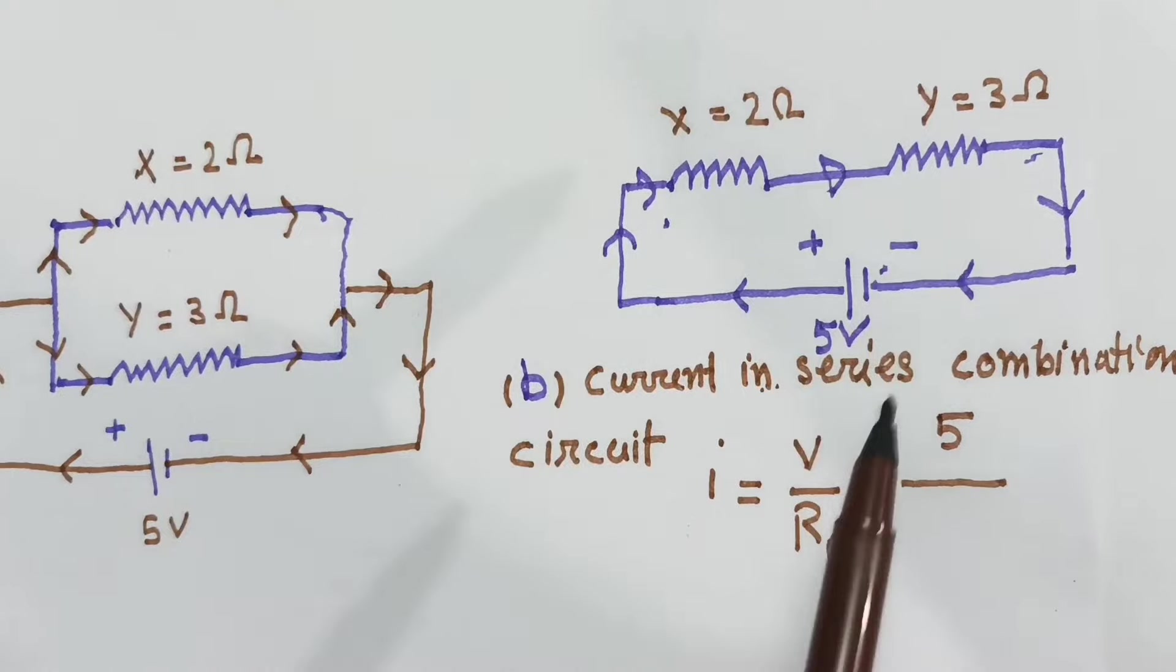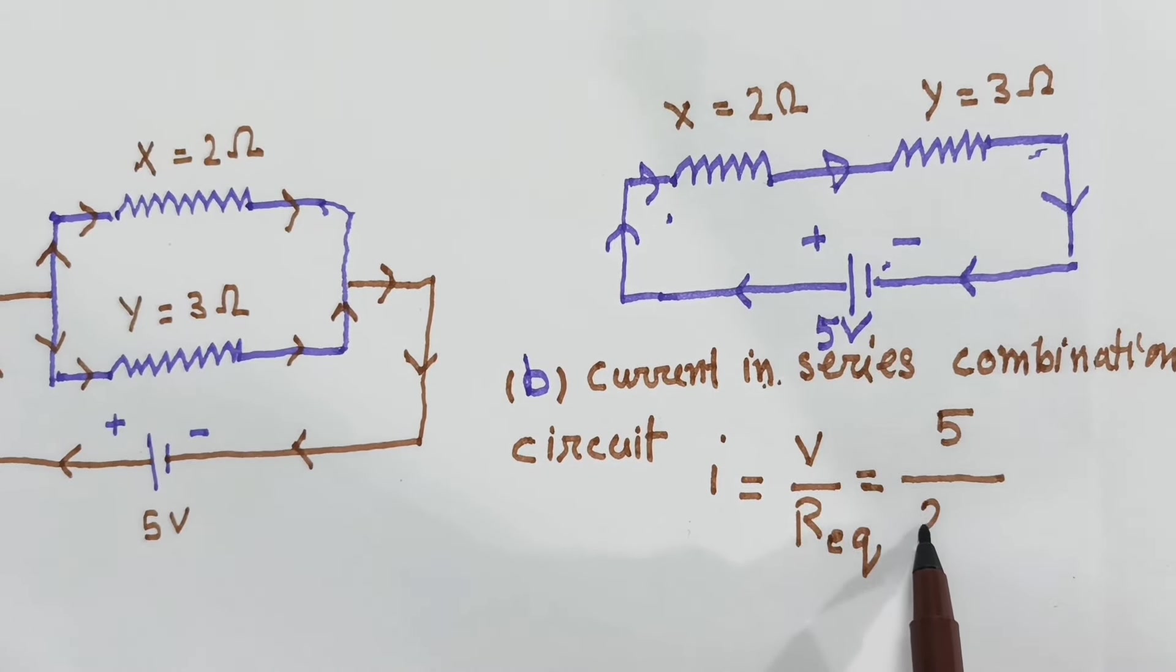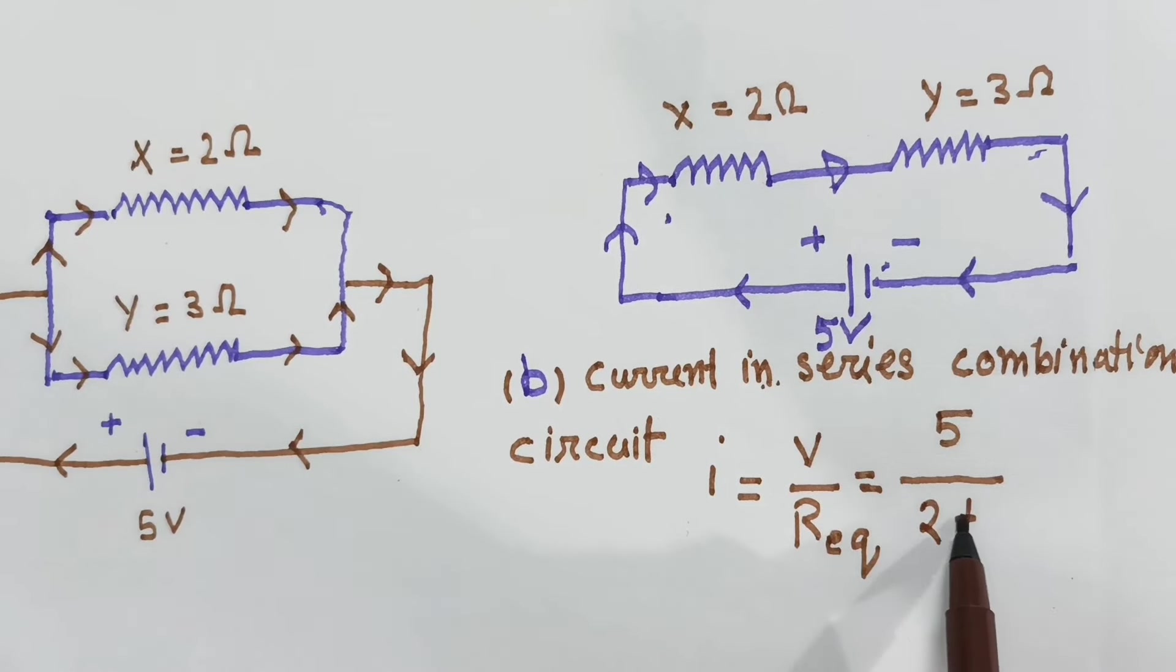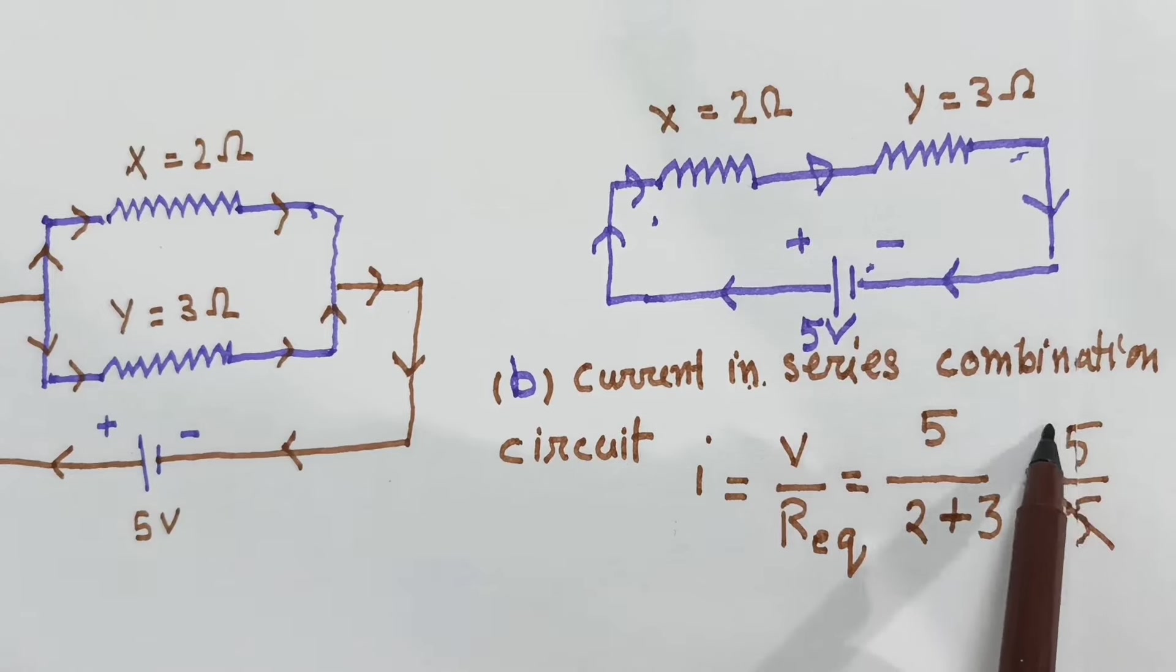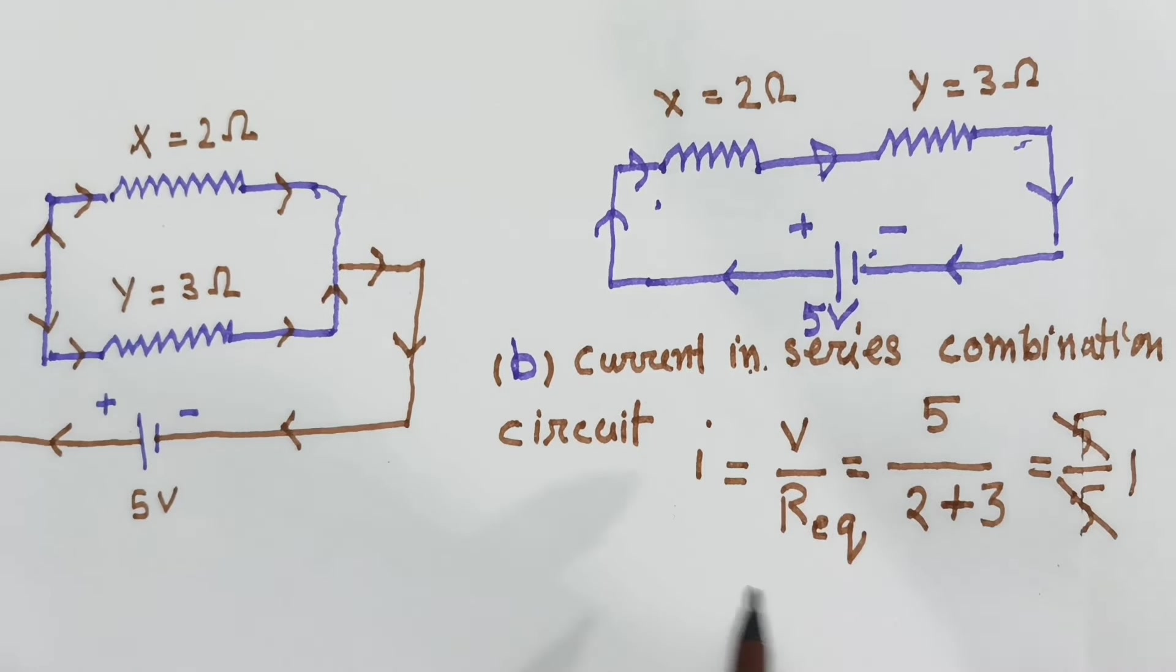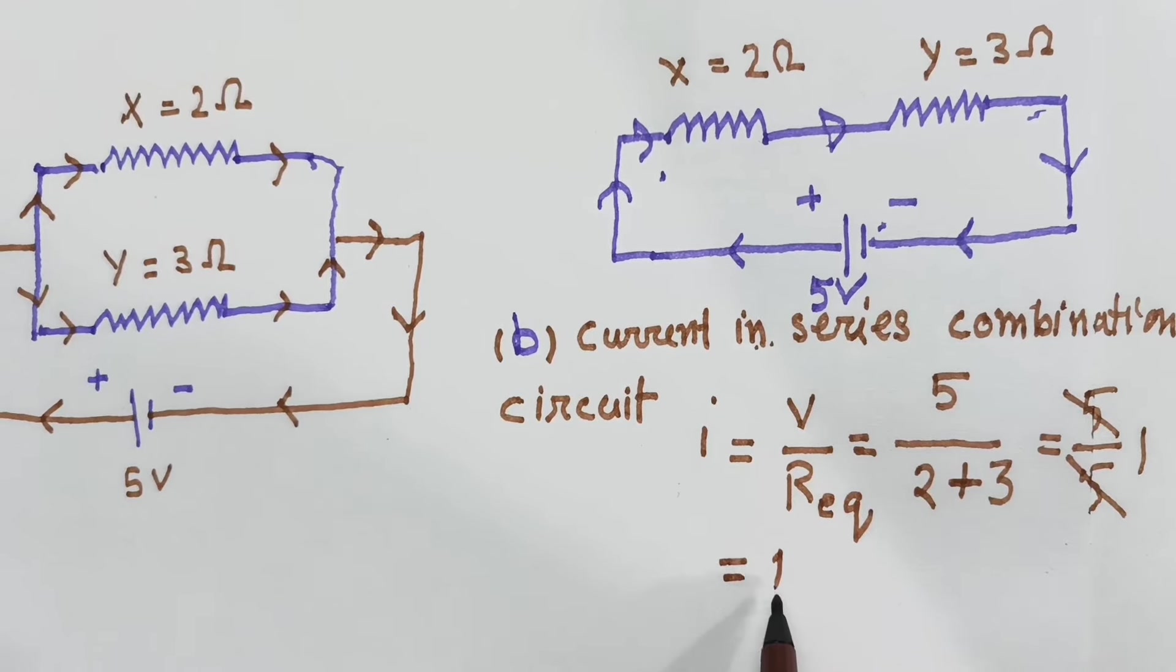Because it is series combination, we will add 2 plus 3. V is 5, so I equals 5 divided by 5, which gives current flow of 1 ampere.